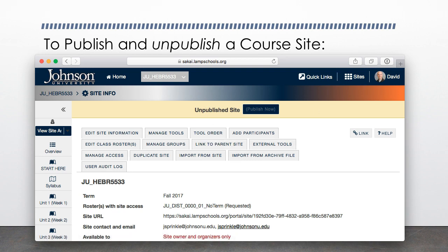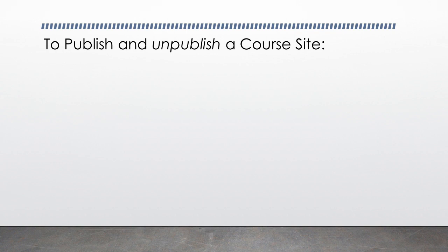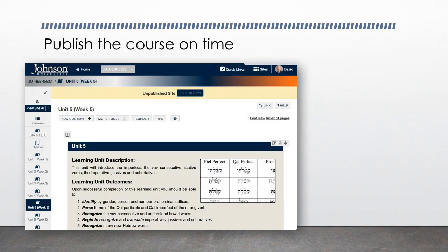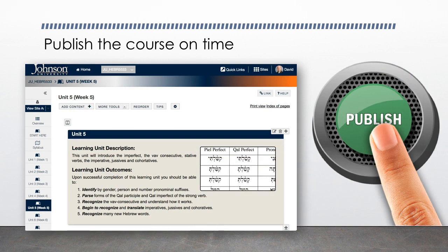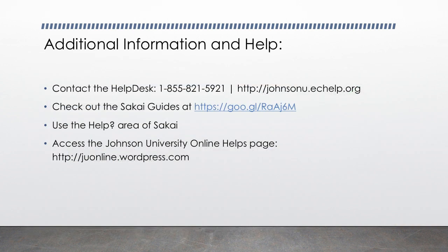Students expect to see the course on the first official day of class. Online courses include all the same material and meet all the same objectives of face-to-face courses, but in a shorter, more compressed time frame. Making the course available by publishing it on time is a critical step for student success. More information on these and other topics is available in other tutorials and documentation.